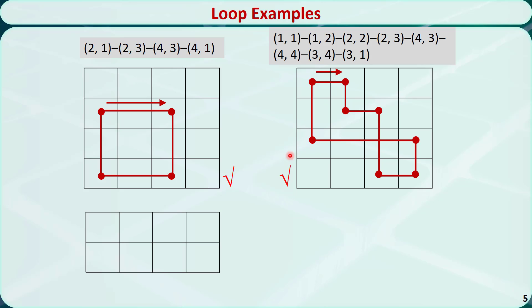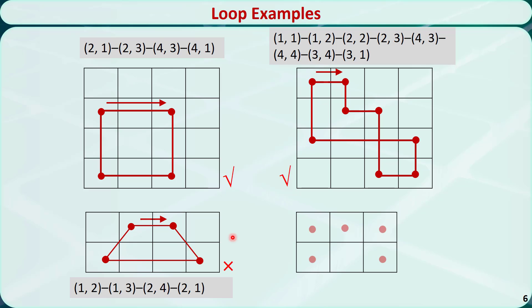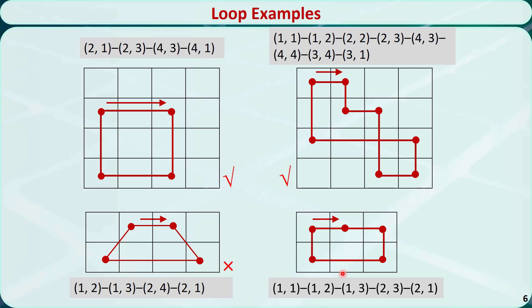Let's check the third example. We pick 4 cells out of 8 cells and build a path. Condition 1 is not satisfied because these two consecutive cells are not in the same row or column — same thing for these two cells. Therefore, it's not a loop, and we don't even have to check conditions 2 and 3. In the last example, we pick 5 cells out of 6 cells. Condition 2 is not satisfied because we have three consecutive cells in the same row. So it's not a loop.